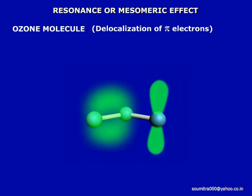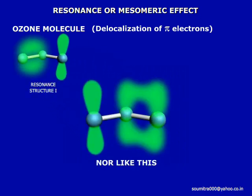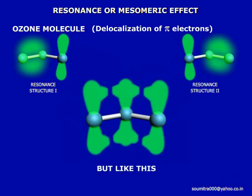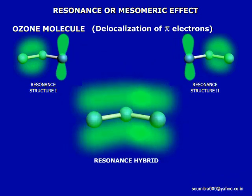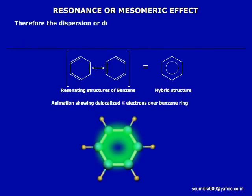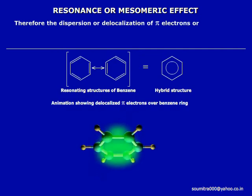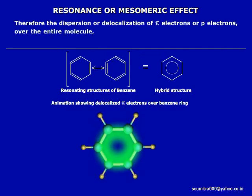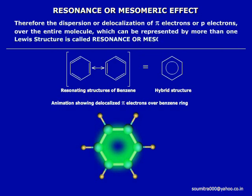One of the double bonds is a pi bond and remains both above and below the ozone molecule. Actually, this pi electron cloud seems to be dispersed like this. These Lewis structures are called contributing structures, or resonance structures, or canonical forms, and this is the actual structure, better known as the resonance hybrid. Therefore, the dispersion or delocalization of pi electrons over the entire molecule, which can be represented by more than one Lewis structure, is called resonance or the mesomeric effect.